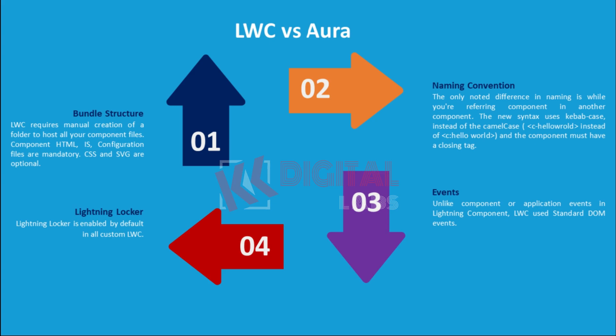Difference between LWC and Aura. Bundle Structure: LWC requires manual creation of a folder to host all your component files. Component HTML and configuration files are mandatory; CSS and SVG are optional. Naming Convention: The noted difference in naming is when referring to a component in another component — the new syntax uses kebab-case instead of camel case, and the component must have a closing tag. Events: Unlike component or application events in Lightning Components, LWC uses standard DOM events. Lightning Locker is enabled by default in all custom LWC.